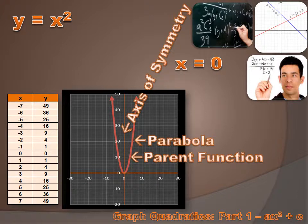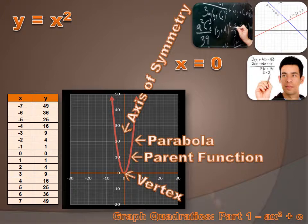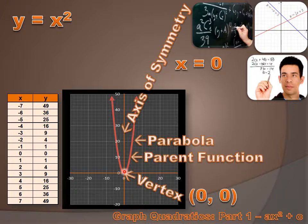But it doesn't have to be — the graph could be slid over to the right or the left and we'd have a different axis of symmetry. The other thing I want to point out is the vertex. The vertex is the extreme value. In this case, our vertex is (0, 0) — an x value of 0 and a y value of 0. You can see that this graph goes up to infinity on both sides, so the minimum y value is going to be 0. Remember, sometimes the graphs are flipped upside down, and in that case we wouldn't have a minimum value for the vertex — we'd have a maximum value.